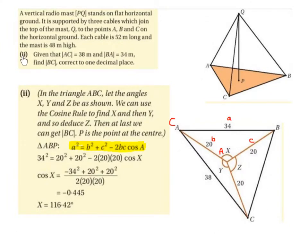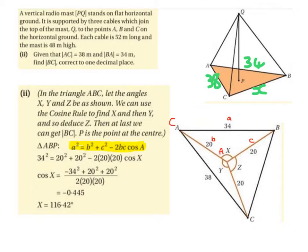Part 2: given that AC is 38 metres and BA is 34 metres, find BC correct to one decimal place. So AC is 38 metres and BA is 34 metres. We need to find BC correct to one decimal place. I'm going to draw out the orange triangle ABC separately. We know that AB is 34, AC is 38, and we do not know what BC is.